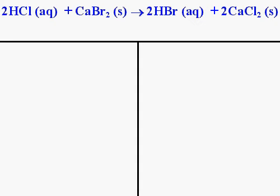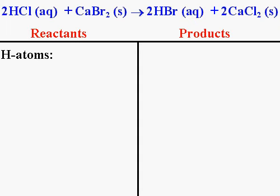I'm going to split the screen in half. The left side of the screen will represent all of the atoms on the reactant side of the equation. The right side will represent all of the atoms on the product side. The very first molecule in the equation is HCl, so let's talk about the H atoms in HCl. In the chemical formula HCl, there is no subscript after the H, so we assume that it's one. Therefore, in one molecule of HCl, there is one hydrogen atom.